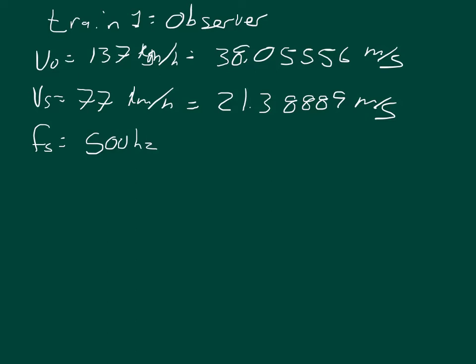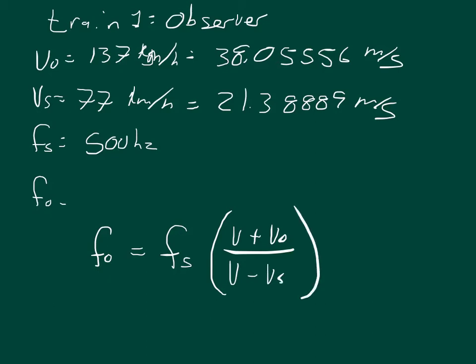So what is the frequency heard by the observer, by train one? The Doppler equation says that the frequency of the observer equals the frequency of the source multiplied by the velocity that sound travels plus the velocity of the observer, divided by the velocity that sound travels minus the velocity of the source.